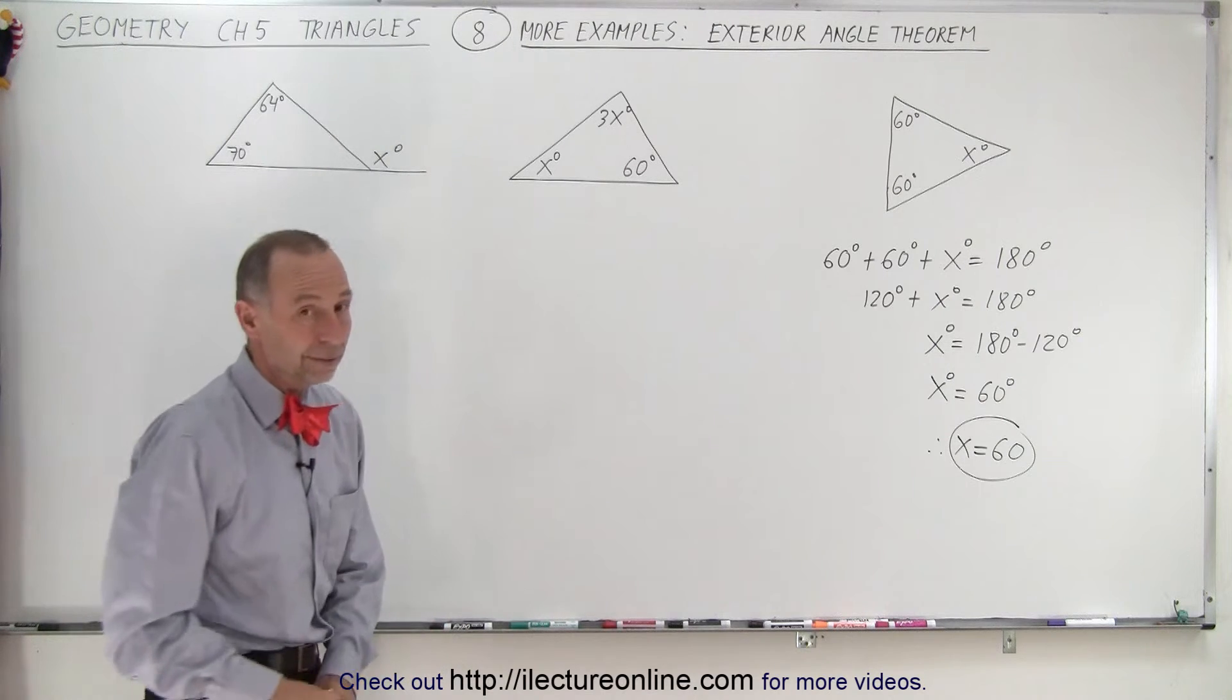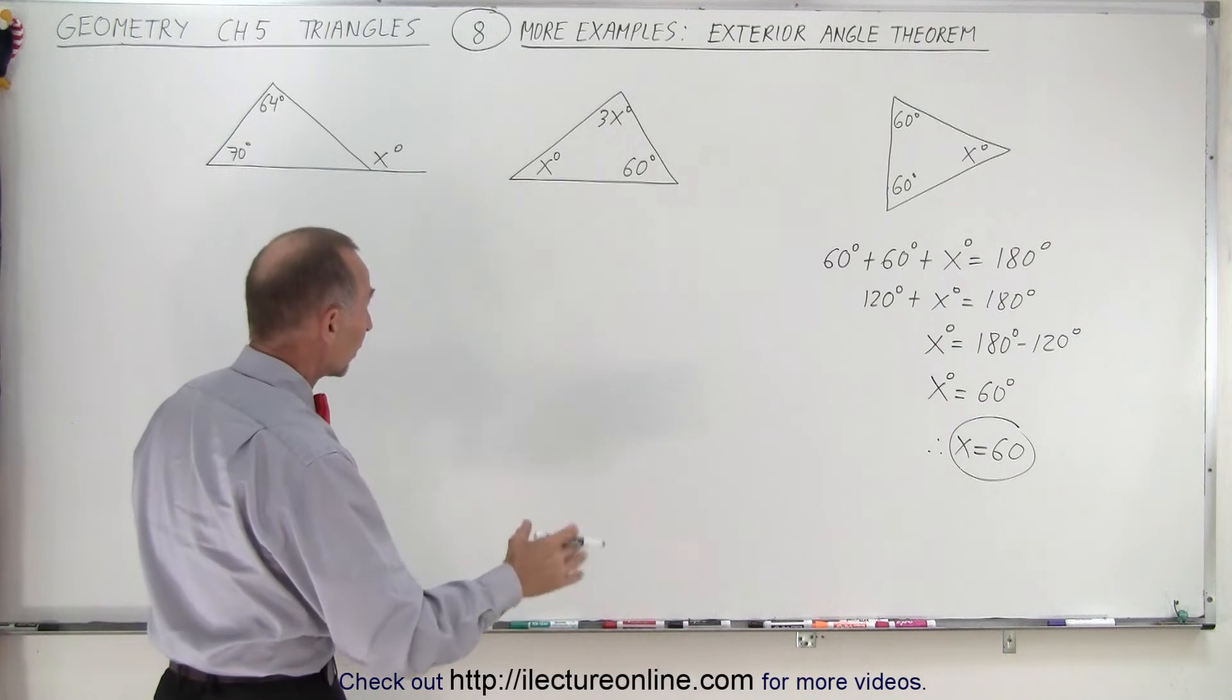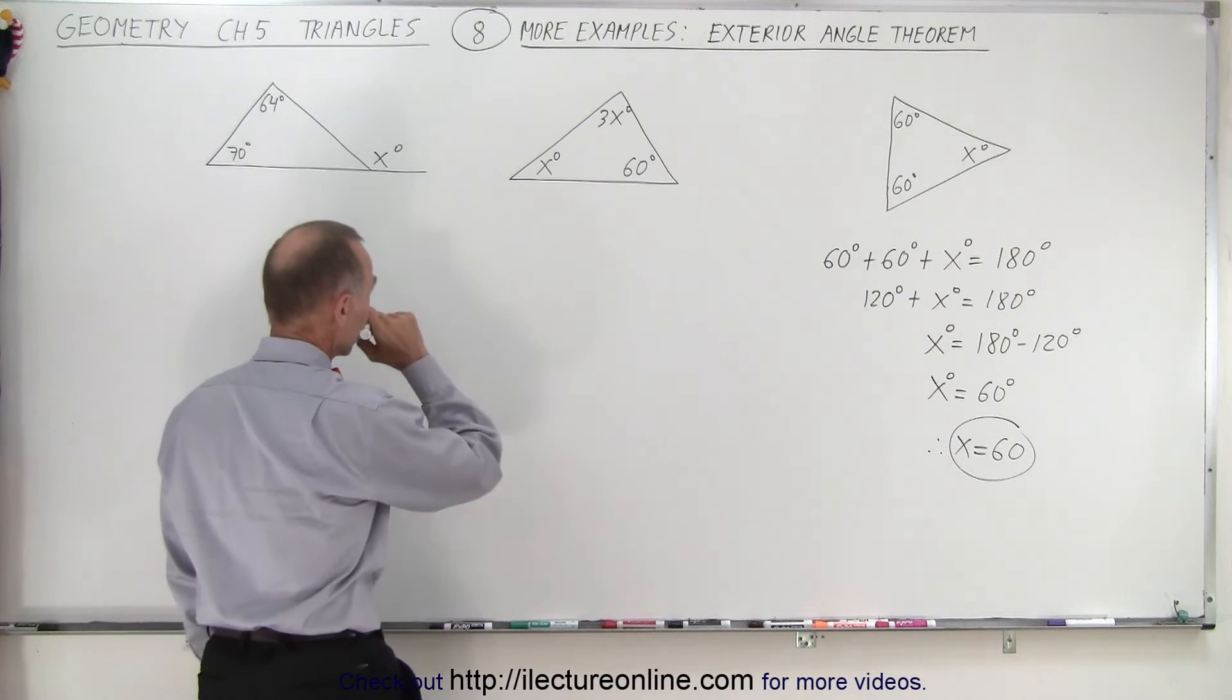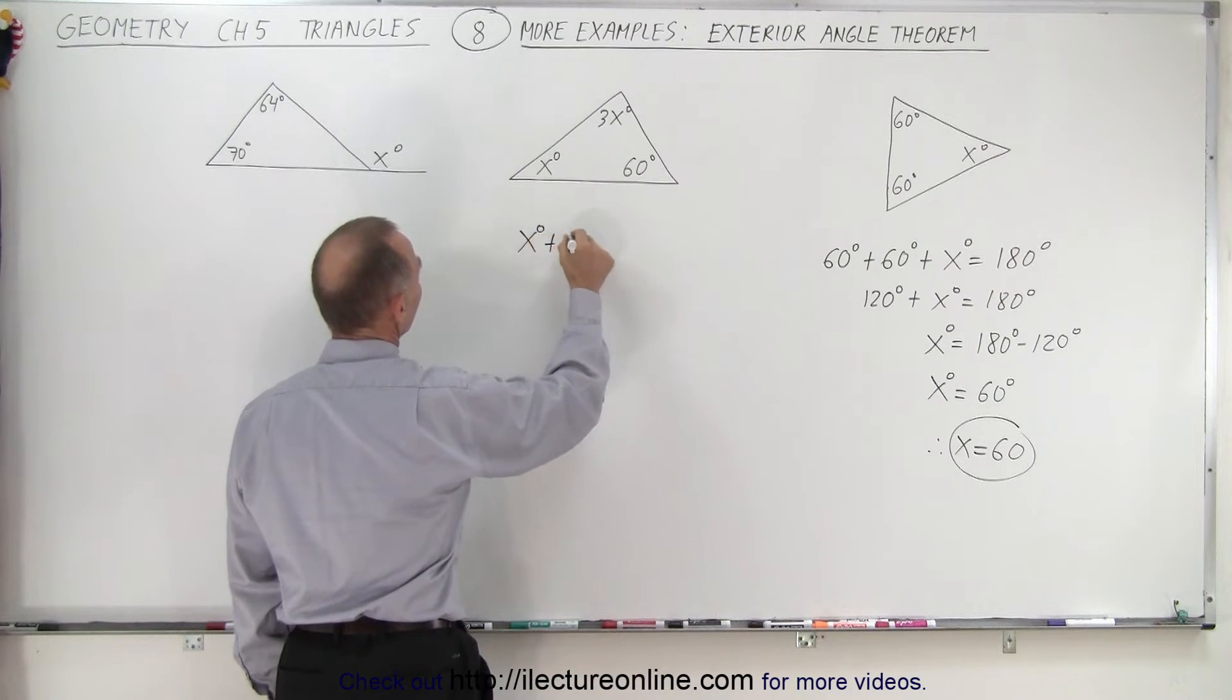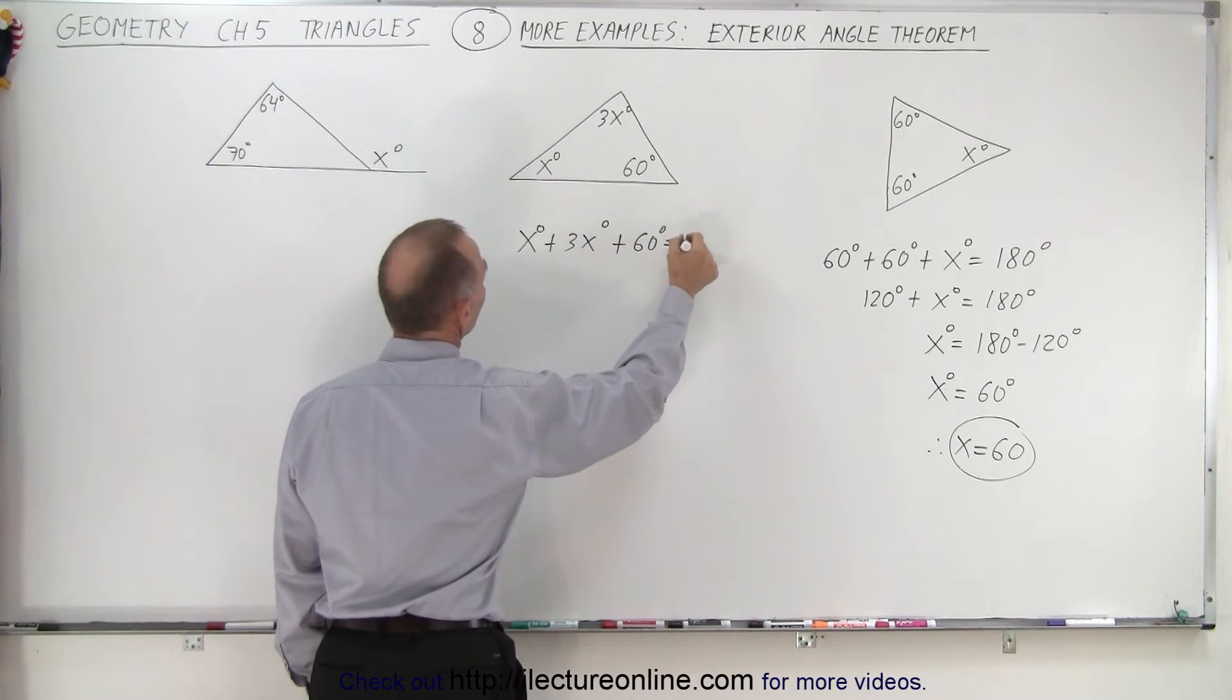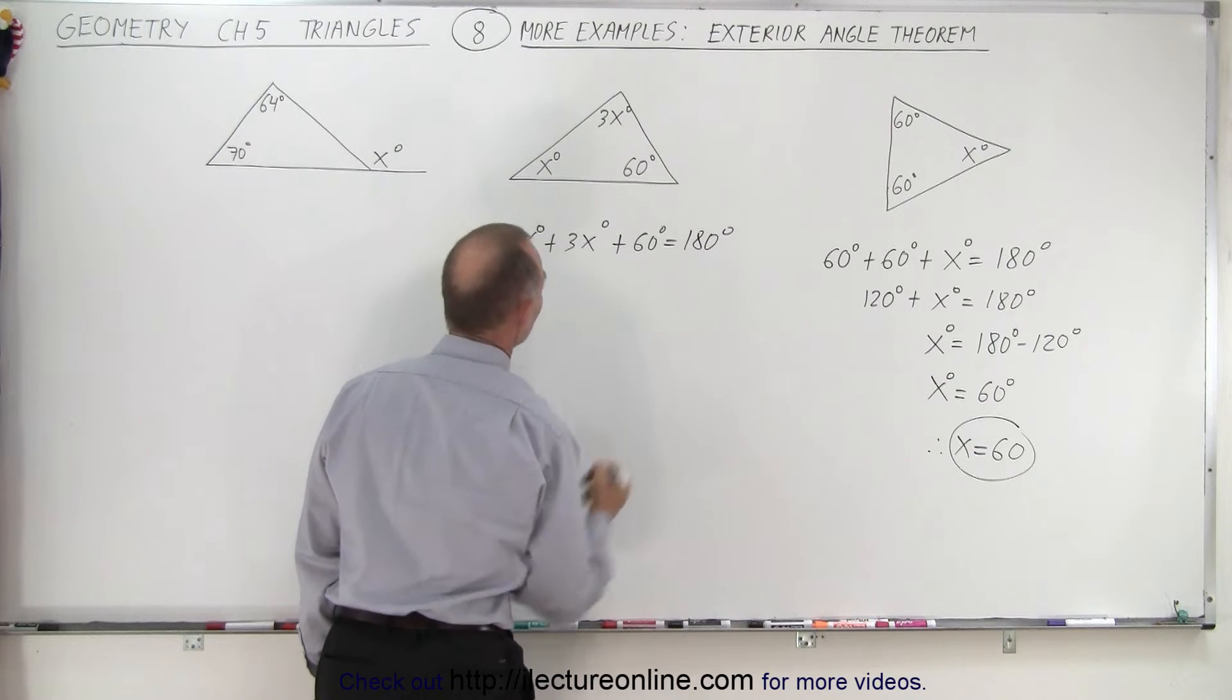On the second one, we can use the same principle. We can sum up the measures of all three angles and it should add up to 180 degrees. So x degrees plus 3x degrees plus 60 degrees equals 180 degrees.